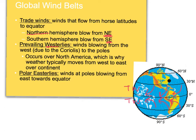The prevailing westerlies come from the west, spanning from about 30 degrees north to 60 degrees north, or 30 degrees south to 60 degrees south. And then the easiest one to remember because of the name: polar easterlies. They're at the poles, they come from the east, and they go down towards the equator.